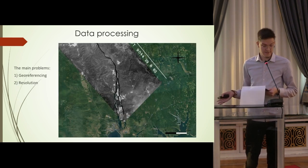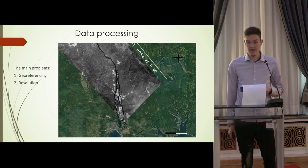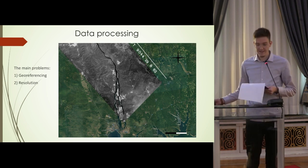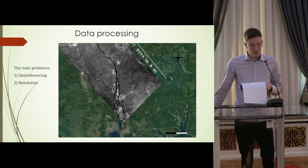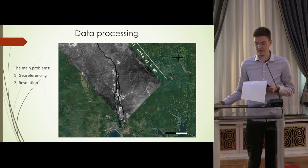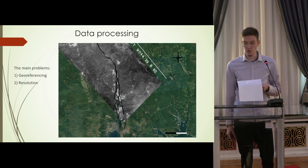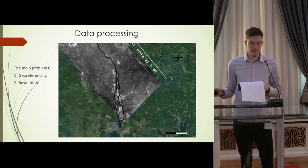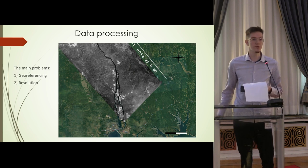The biggest challenge in this project was processing the Corona satellite images. Georeferencing was quite problematic: the Siberian taiga region in the 1960s did not abound in roads and settlements that could be used as reference points in modern times. Therefore, I had to use the mouths of small rivers and the sharp edges of small islands as control points.